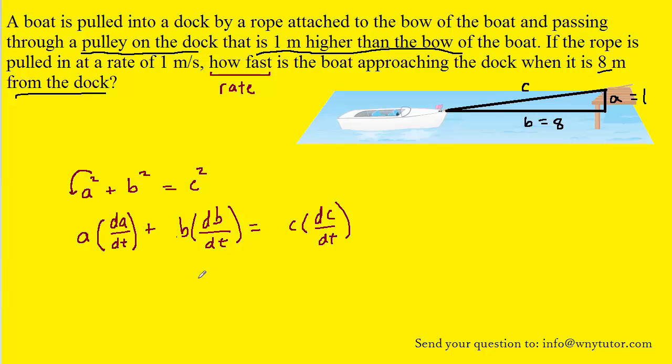We can then try to solve for the variable that the question is asking us to solve for. Once again, it's asking how fast is the boat approaching the dock? The boat is approaching the dock sort of straight ahead as it gets reeled in by the pulley. So really the question wants to know, how fast is the distance that we have marked B changing? In other words, we are being asked to calculate db dt. So why don't we go ahead and try to isolate db dt by first subtracting the a da dt term to the other side. And then we can divide both sides of the equation by B, and that's going to allow us to isolate db dt.